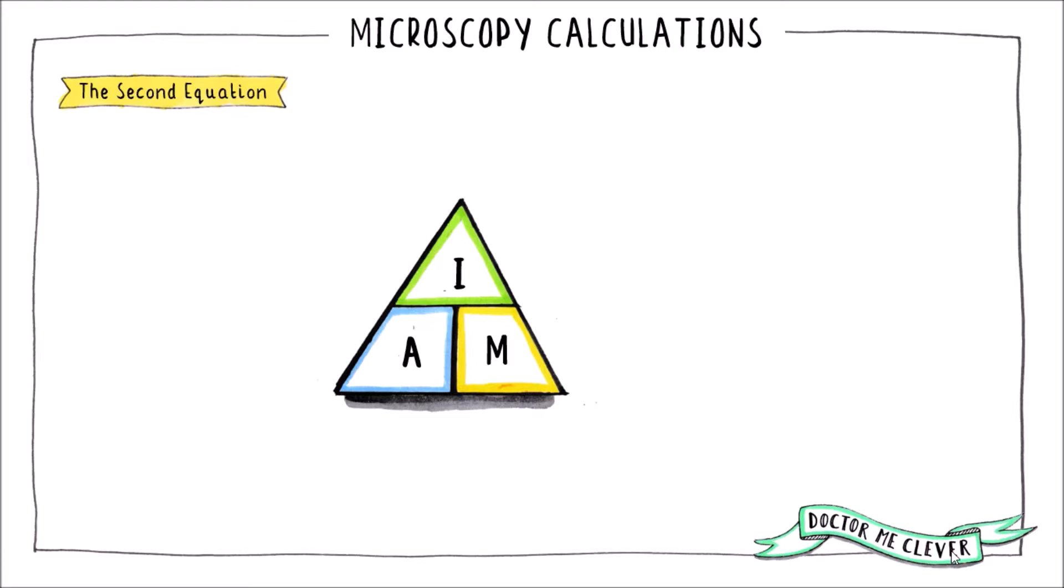So most of you should be familiar with how to use these triangles but I'll just whiz through the three equations hidden within this triangle. Actual size equals image size divided by total magnification. Image size equals actual size times total magnification. And total magnification equals image size divided by actual size.